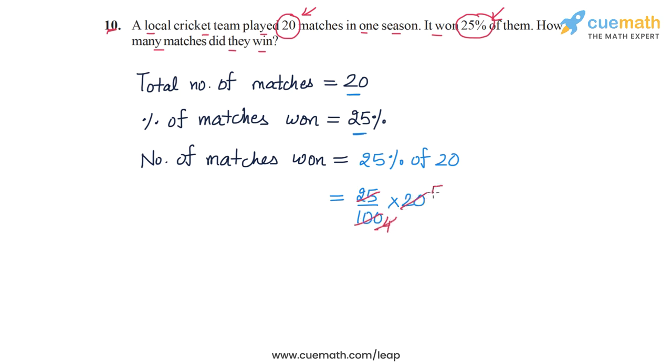So we obtain the number of matches won as 5. The answer is that the cricket team won a total of 5 matches. This completes question number 10.